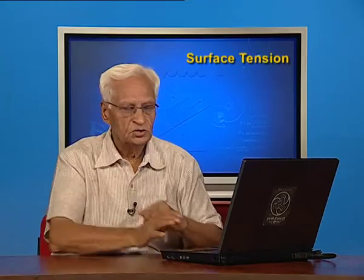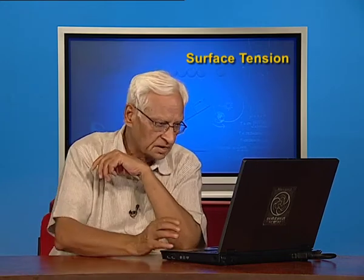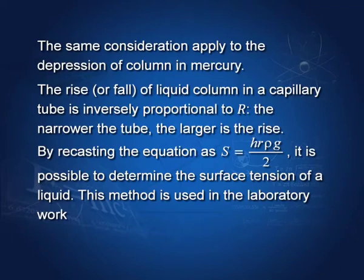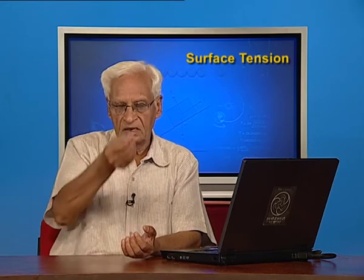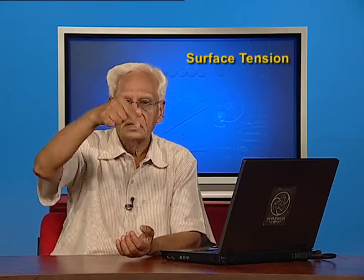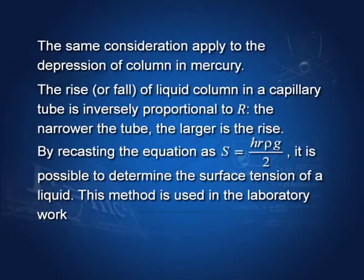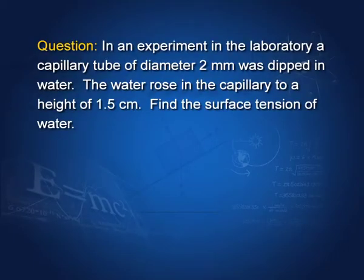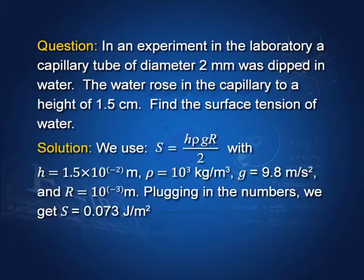The same thing happens with mercury, except that mercury goes down in the tube rather than rising. This equation can also help us determine surface tension in the laboratory. You dip a small tube, measure the rise of the liquid column, measure the radius of the tube, and use S = h r ρg / 2. For example, if a capillary tube of diameter 2 mm is dipped in water and water rises to 1.5 cm, plugging in the values gives S ≈ 0.073 J/m² for water.